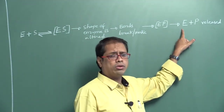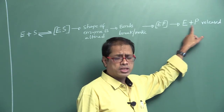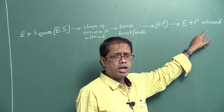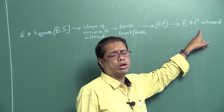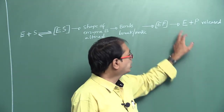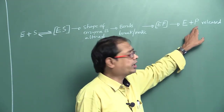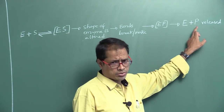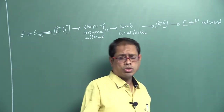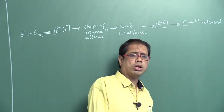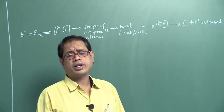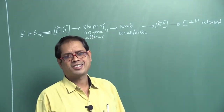At the end of the reaction, the answer is E plus P — both enzyme and products. Do not write only E or only P. Both substances, enzyme and products, are produced at the end of the reaction. Please note down all these points. I hope you understood, and we will meet in the next class.